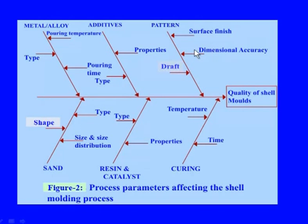Other important parameters are sand-based: the shape of the sand, the type of the sand, and the size and size distribution of the sand — these influence the surface finish that can be obtained. Resin and catalyst-based parameters also affect the overall quality of the product. Another important category is curing-based parameters, where curing temperature and curing time are the most important parameters affecting the ultimate quality of the product.